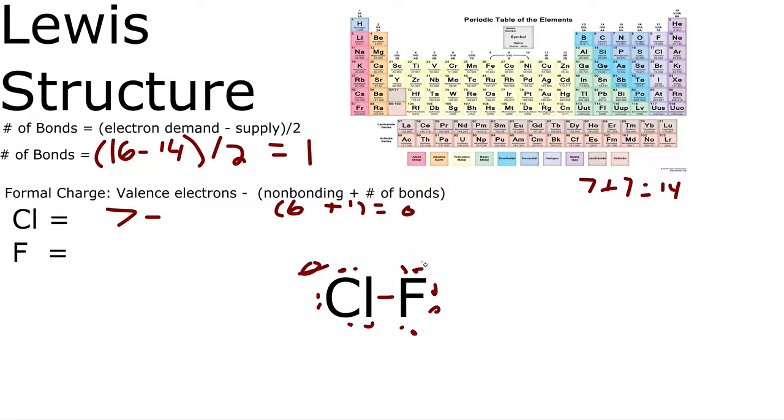So let's check fluorine. We have 7 valence electrons once again. Non-bonding: 2, 4, 6, plus the number of bonds. We have a single bond, so 7 minus 7 is 0. So we also have a 0 formal charge. This will be our correct Lewis structure.